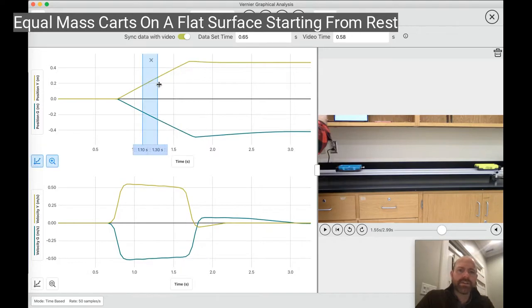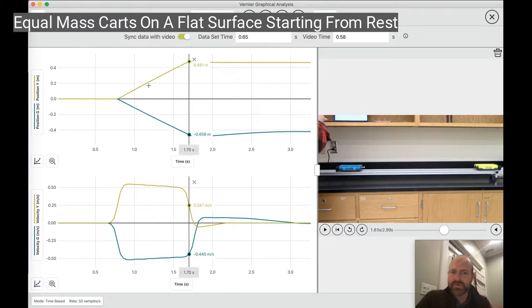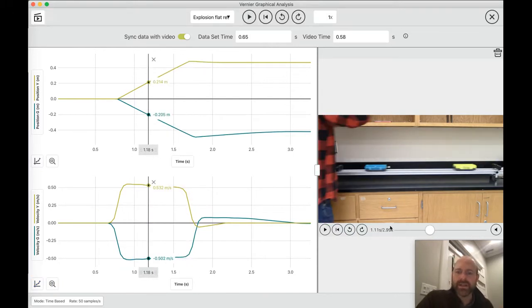A couple of things to notice that the position graph tells you a lot of things. The straight lines tell you that the velocity is pretty much constant. We have a pretty much horizontal line here, starting with 0 velocity, positive and negative after the explosion. So there's a few different things we can look at here and see.